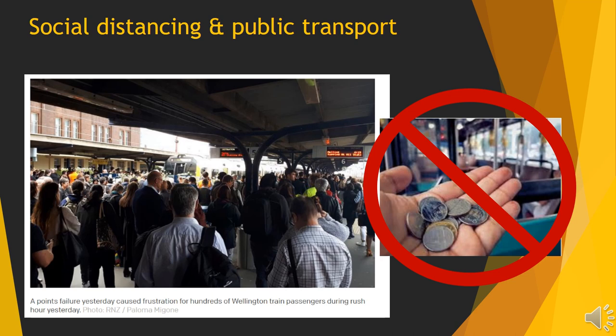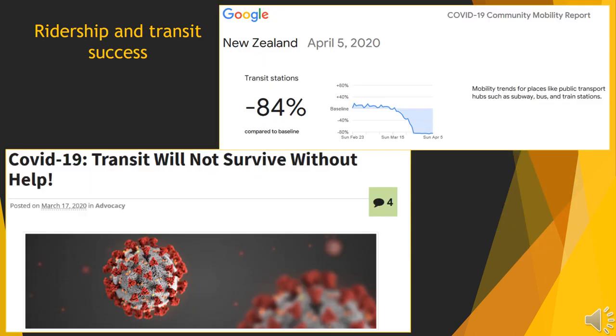Different agencies and cities have had to implement changes to their operations and service procedures — things like eliminating cash payments, eliminating payments altogether, and rear boarding instead of boarding at the front. As the pandemic extended, we've seen drops in ridership and changes to service schedules. A great deal of the reduction in public transport use can be attributed to increases in telecommuting — more people working from home. Even with reduced ridership and potential transmission risk, we can't entirely shut down public transport because it's an essential service some people rely on.